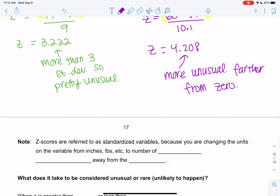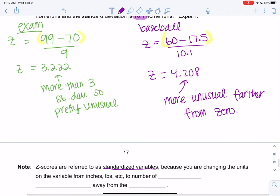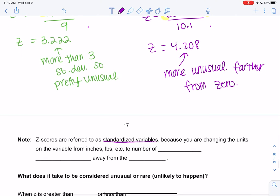I'm going to say farther from zero because negative z-scores can also be considered unusual. So z-scores are considered a standardized variable because we're changing units from inches, pounds, whatever, home runs, percent maybe, to the number of standard deviations away from the mean. So it can have any units—the data can have any units—but the z-score actually has no units. Number of standard deviations away from the mean has no units, it's not a measurement anymore.